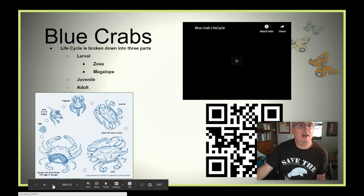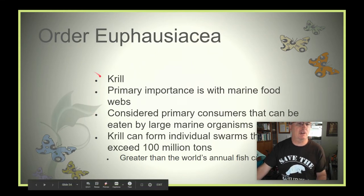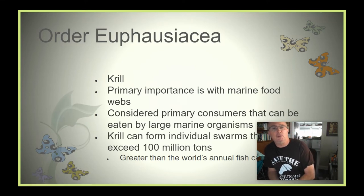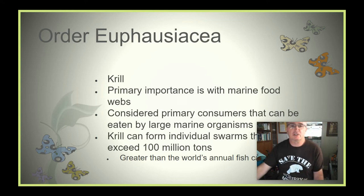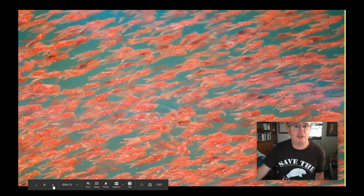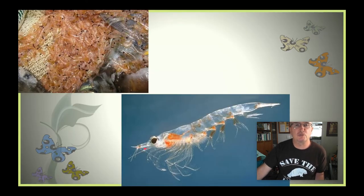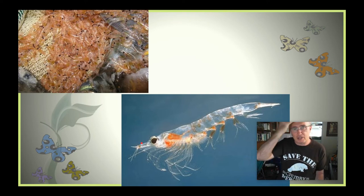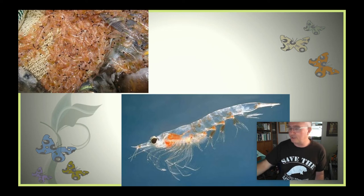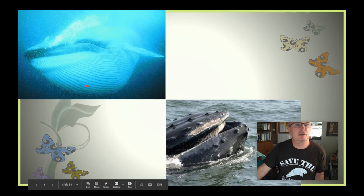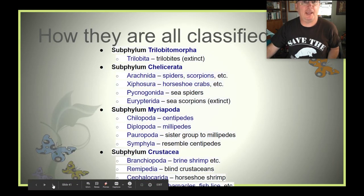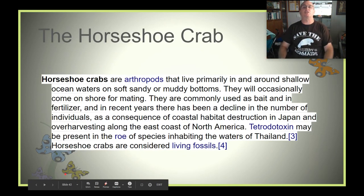Krill are another very important step in marine food webs, considered primary consumers that can be eaten by many other organisms. Most krill are pretty small — considered plankton — but not microscopic. They occur in huge swarms in the southern ocean and northern reaches near the poles. Blue whales and humpback whales love to eat krill. That finishes our talk on Arthropoda.